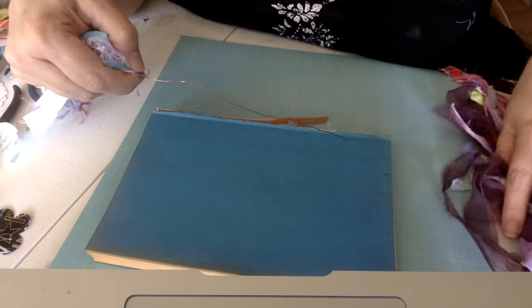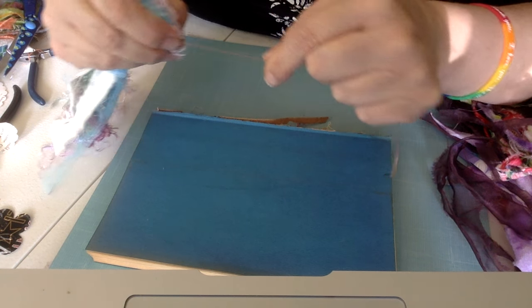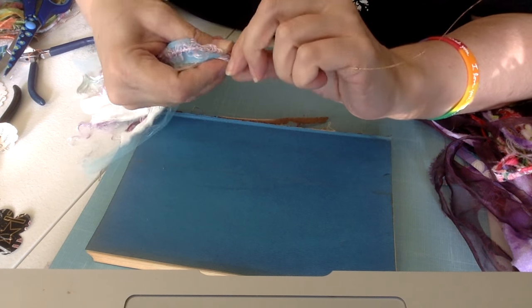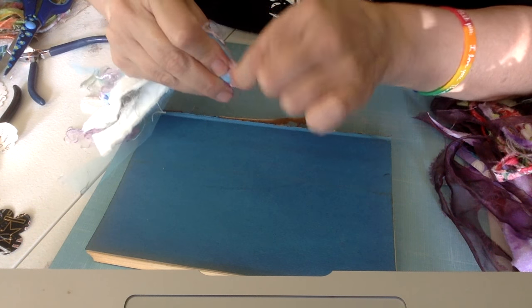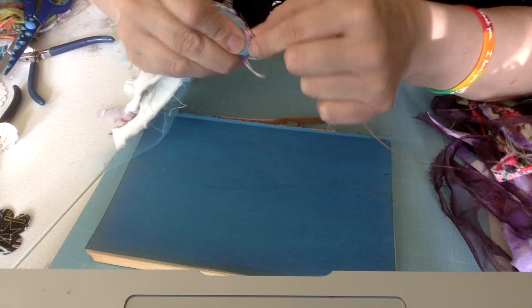So you want to take the smaller side and you want to wrap it around the larger, the longer piece of ribbon. Now, I'm just using my fingers. If you're using copper wire like I am, make sure that it's soft or dead soft.